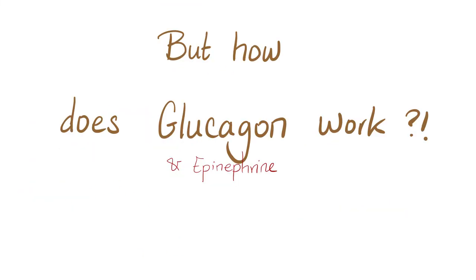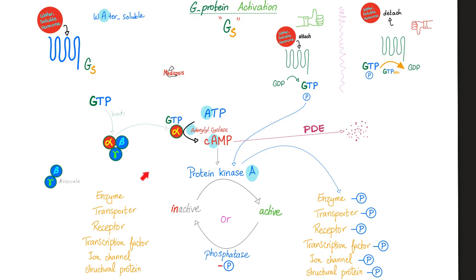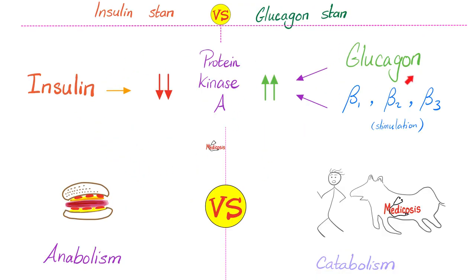Now you know how insulin works. But how does glucagon work? It's the same story of the G-protein-coupled receptor — this is protein kinase A, because protein kinase B is for insulin. This is how glucagon works; this is how epinephrine works. Glucagon and beta stimulation love protein kinase A; insulin hates protein kinase A but loves protein kinase B.